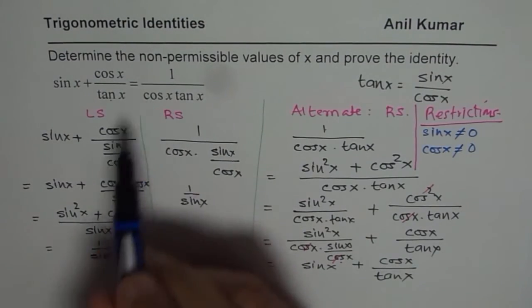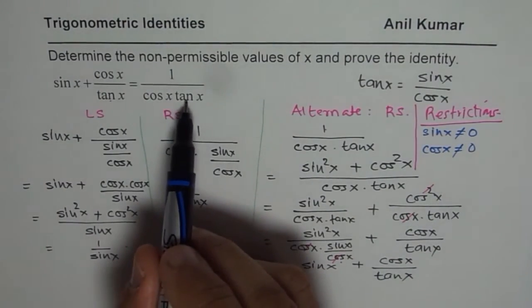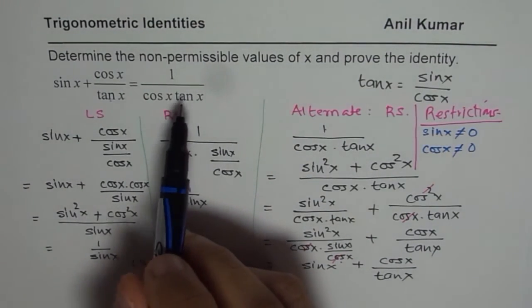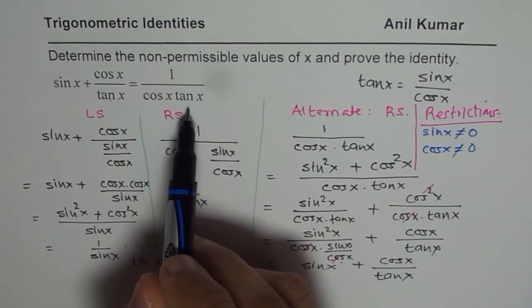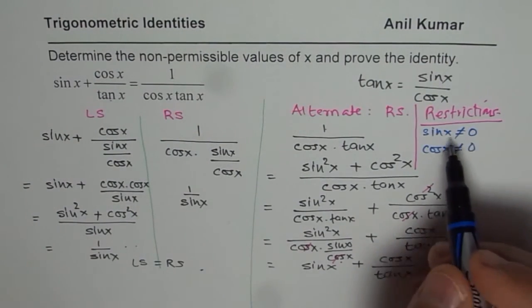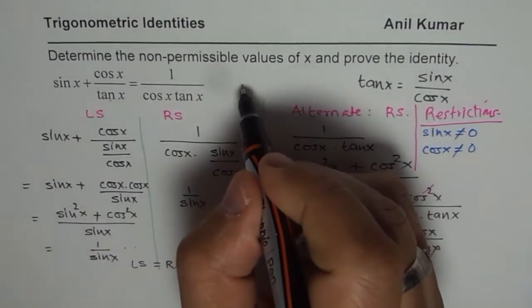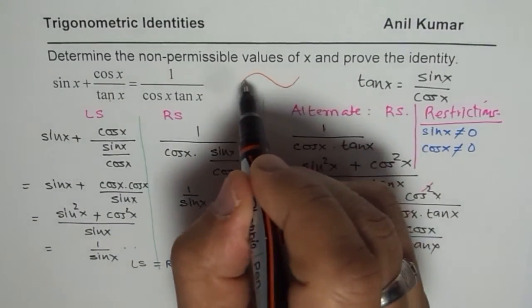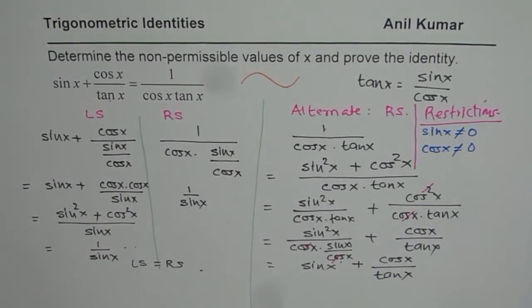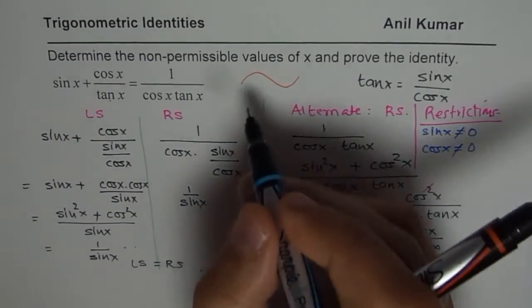So tan x is sin over cos. So these are the two restrictions. Cos x cannot be 0 also, and tan x cannot be 0 also. Tan x is sin over cos. Tan is 0 for sin x equals to 0. Now these values will give us, if you sketch a sin graph, sin is 0 when? Sin is 0 at three points, which are 0, pi, and 2 pi.